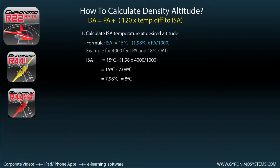Let's do an example for 4,000 feet and an OAT of 18 degrees Celsius. First, you subtract the lapse rate value from 15 degrees Celsius, and you end up with 8 degrees Celsius. That's the ISA temperature at your desired altitude.